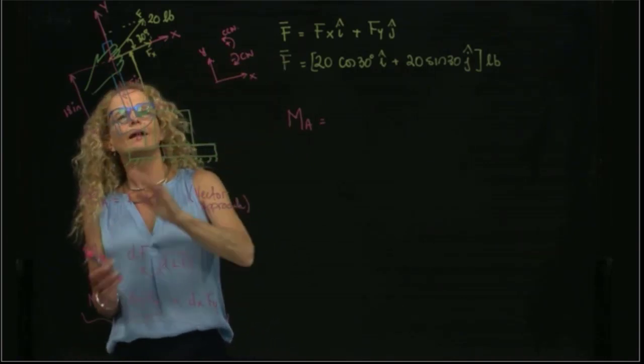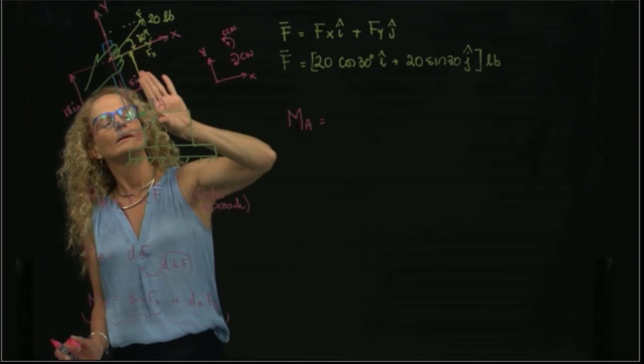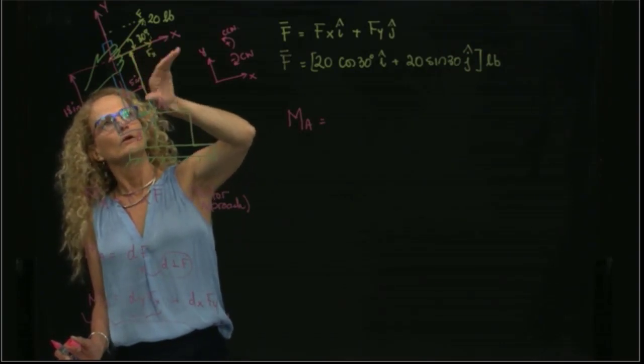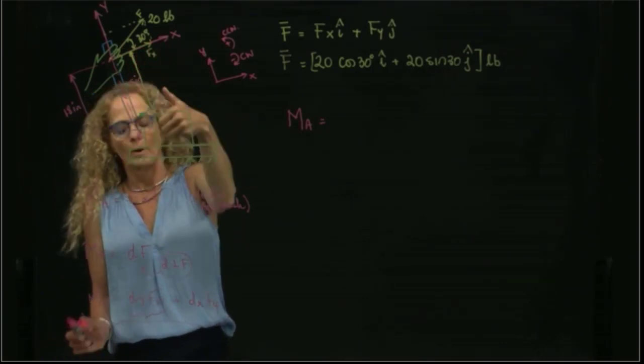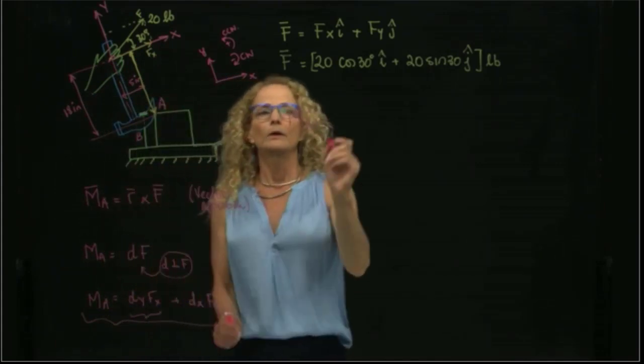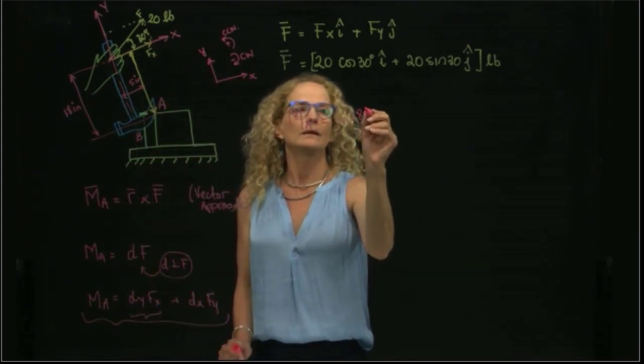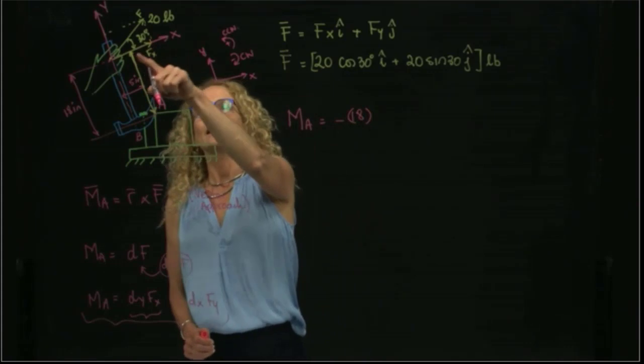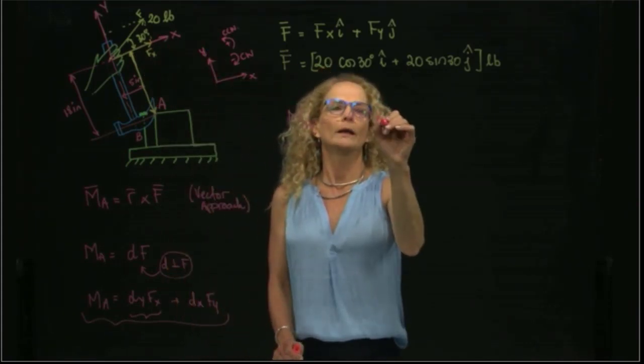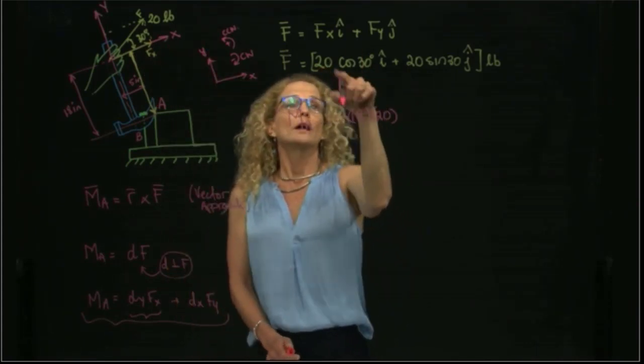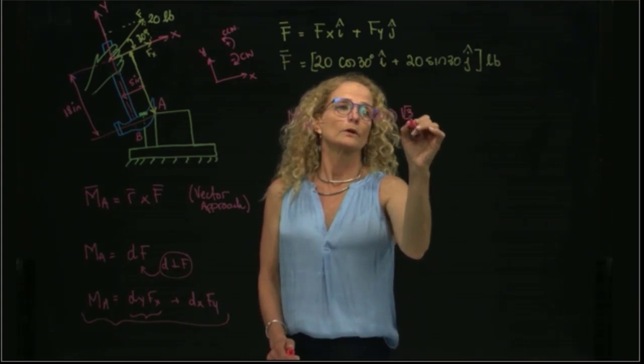So in this case, I have 18, 18, curl my fingers to fx, and I get clockwise. So therefore, it will be negative 18 times the x component, which is 20. Cosine of 30, we know that is square root of 3 over 2.